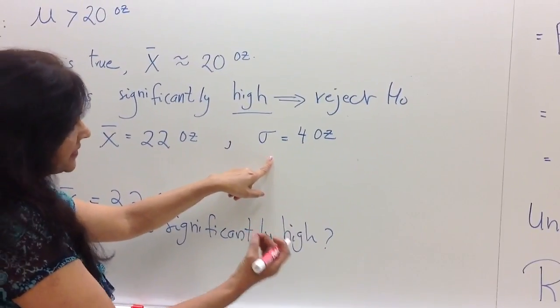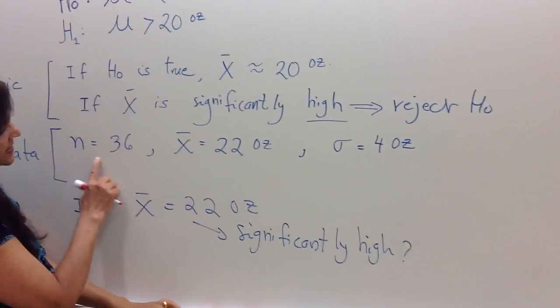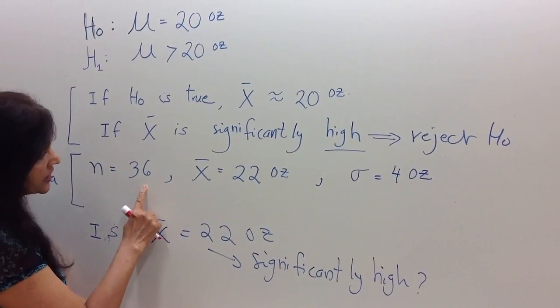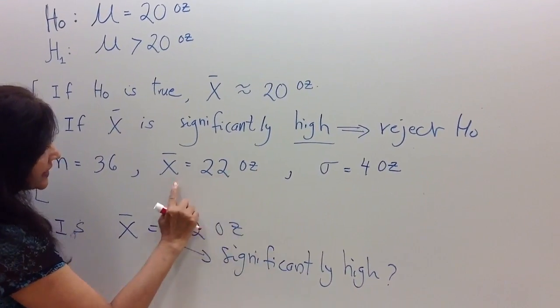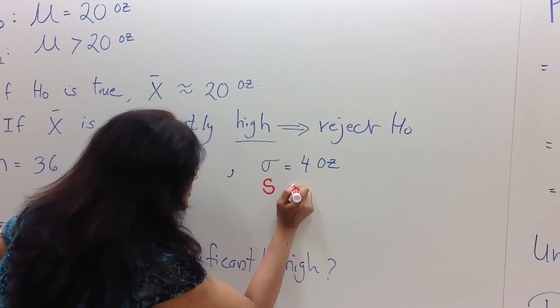Often, population standard deviation is not given. So that means that when we take a sample of 36 observations, we not only calculate the sample mean, but we will also have to calculate the sample standard deviation.